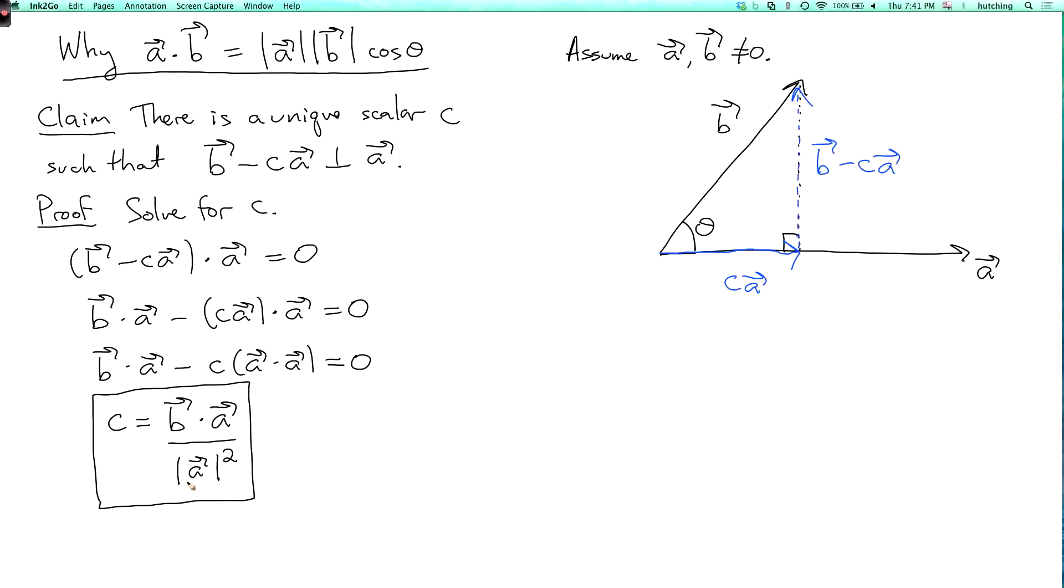All right, now what does that have to do with the cosine of theta? Well, what is the cosine of theta anyway? So the cosine of theta is the length of this adjacent side of the triangle divided by the length of the hypotenuse. So it's the length of c a divided by the length of b. That's actually not always true. It's true when the picture is shown, when c is bigger than zero, if c is greater than or equal to zero.